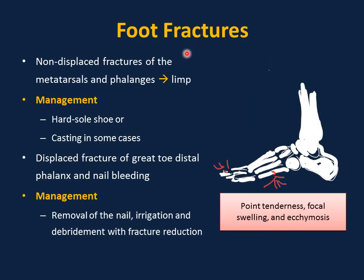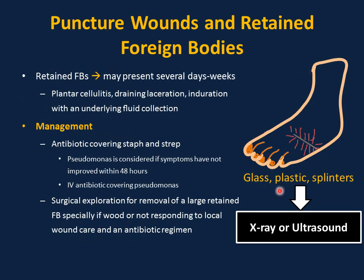Foot fractures are common in children due to twisting injuries and can cause non-displaced fractures of metatarsals and phalanges. Look for point of tenderness, focal swelling, and ecchymosis. Management of non-displaced foot fractures is mostly with a hard sole shoe or casting in some cases. Stubbing of the great toe can cause a displaced fracture of the distal phalanx with nail bleeding and usually requires referral to pediatric orthopedics for nail removal, irrigation, debridement, and fracture reduction. Many children play without footwear and can suffer from puncture wounds and retained foreign bodies — glass, plastic, splinters, or wood — which may present days to weeks after the incident with plantar cellulitis or a draining laceration.